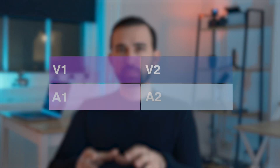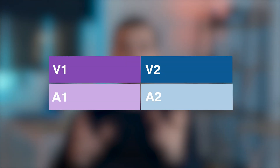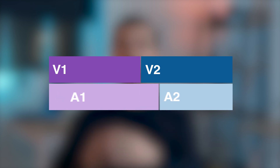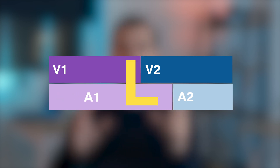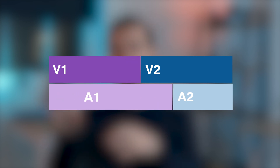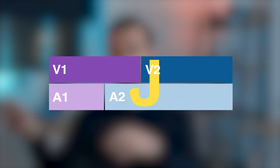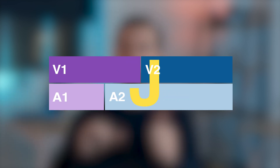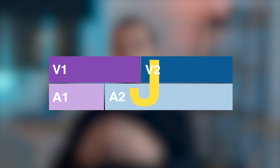Ten — my favorite, because it is about sound: L-cuts and J-cuts. These create seamless transitions between scenes because the audio continues into the next shot or carries over from the previous one. Let's hear some examples.